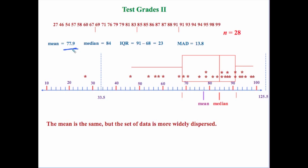Notice that there is some difference between the mean and the median: 84 versus 77.9. But the telltale values here are the interquartile range and the mean absolute deviation — those are much larger than in the previous data set.